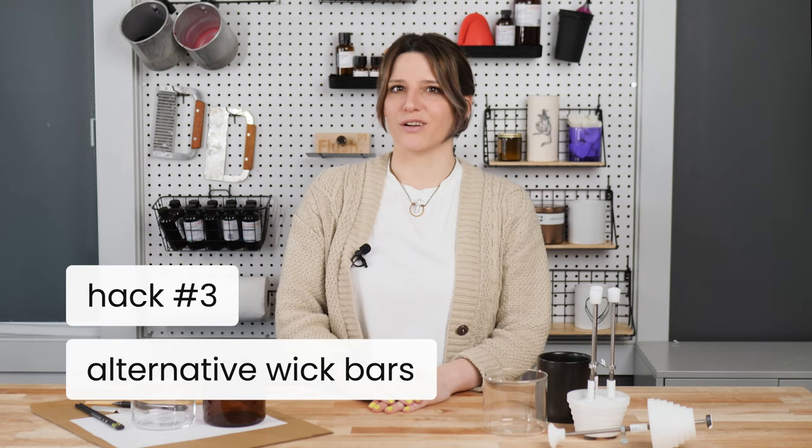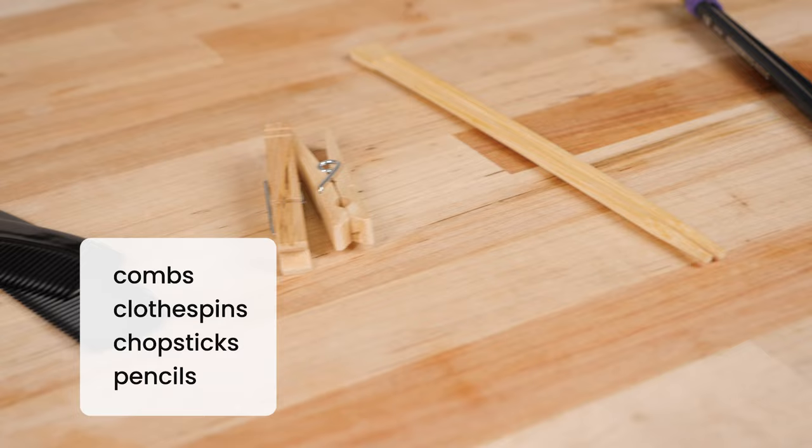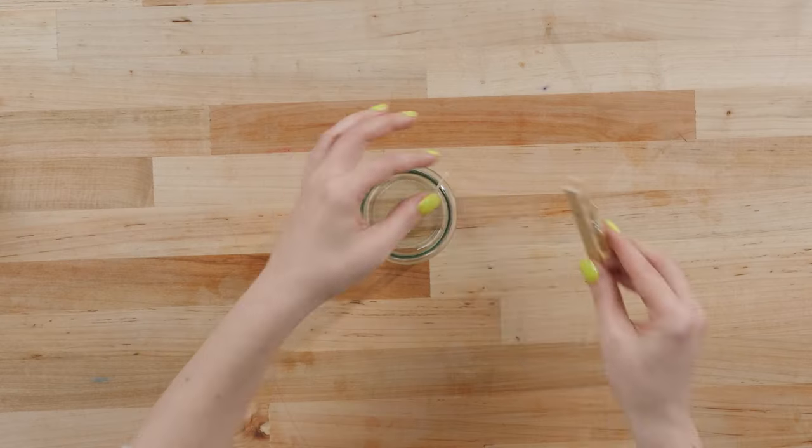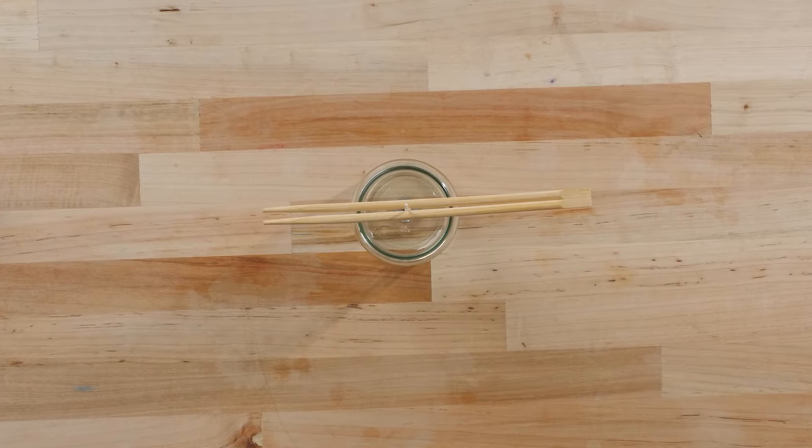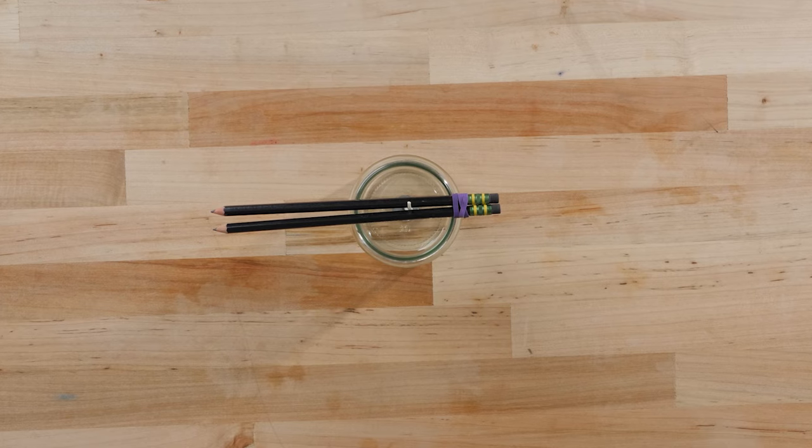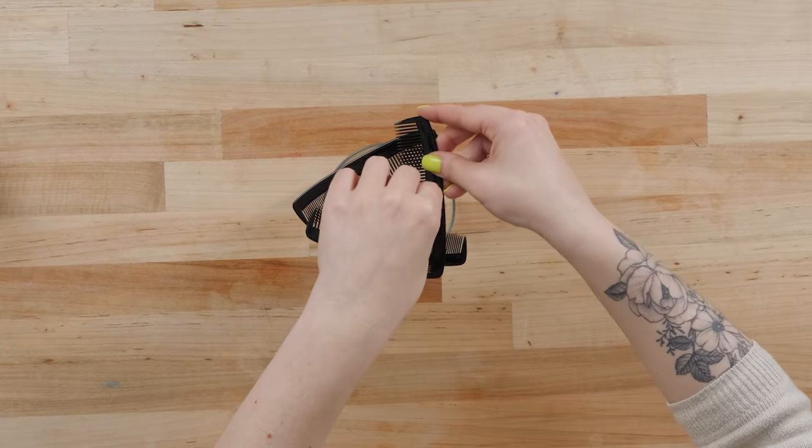Here's a hack for alternative wick bars. Wick bars are my favorite wick centering tools, but if you don't have any on hand or if you run out, here's some other materials you could try. If you have any tips or tricks for wicking your candles, let me know.